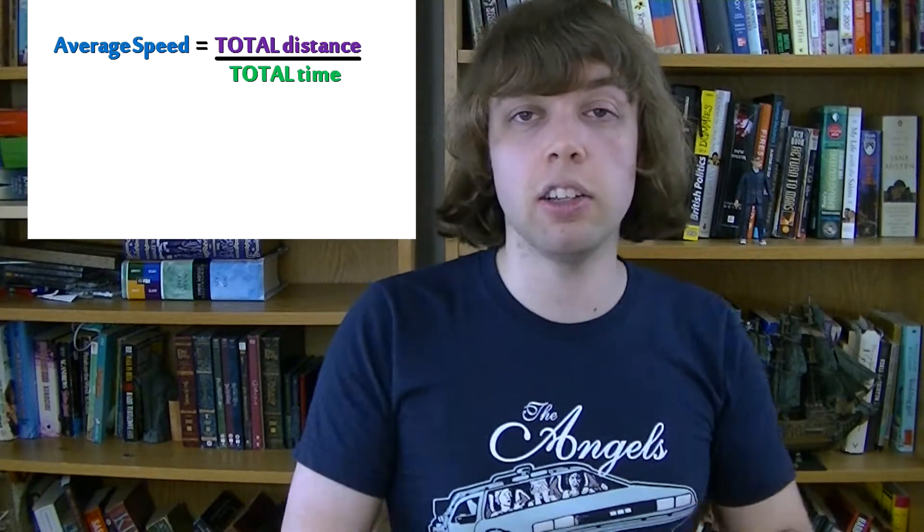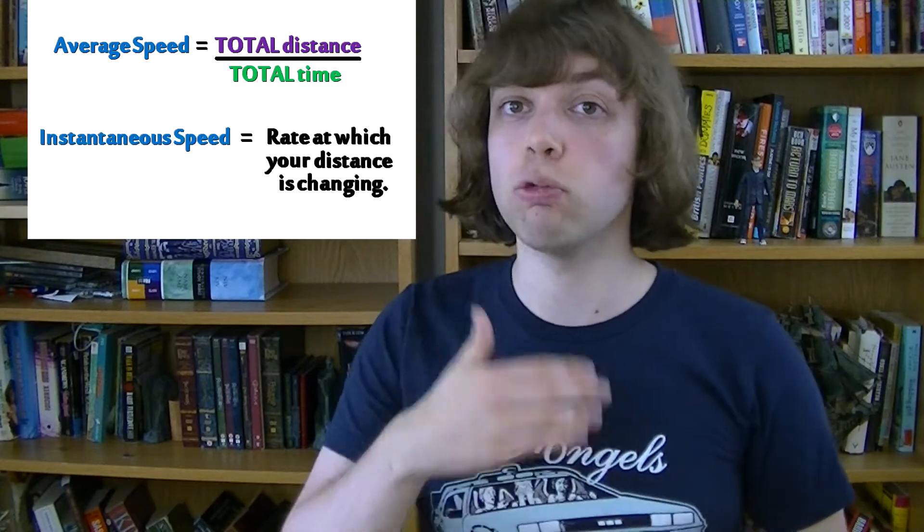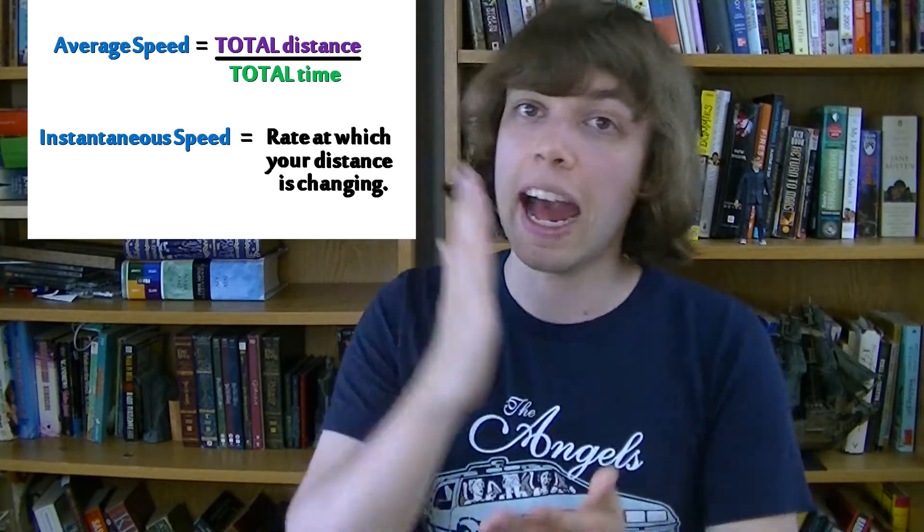Average speed is your total distance divided by your total time. Instantaneous speed, on the other hand, is the rate at which your position is changing at that instant.